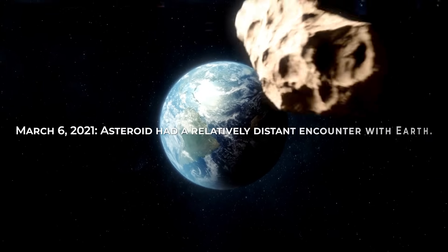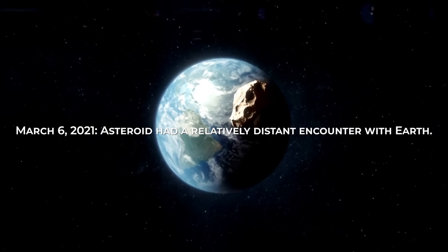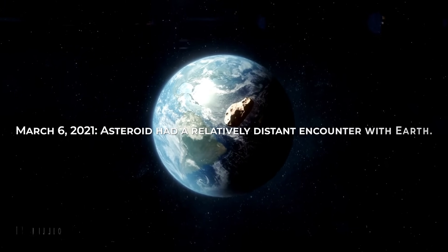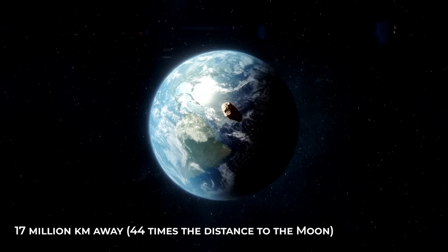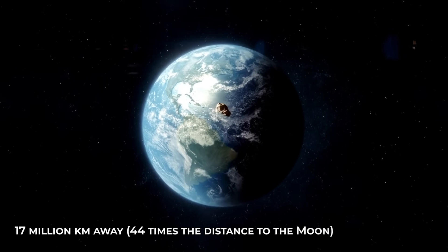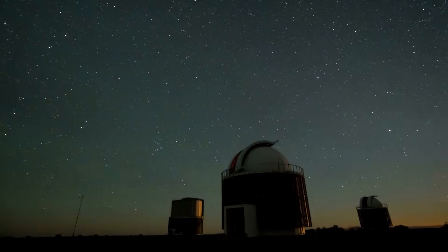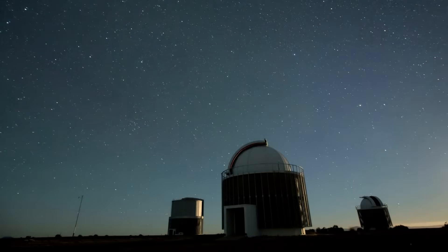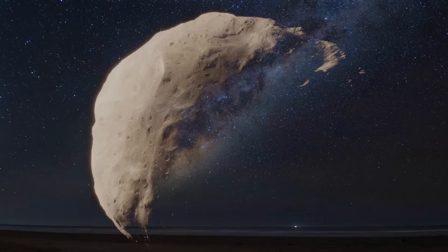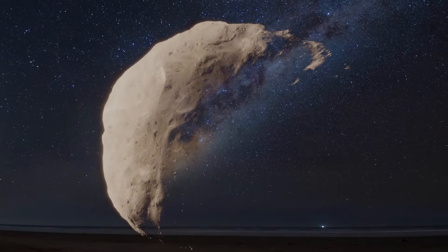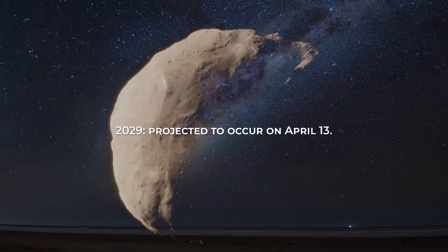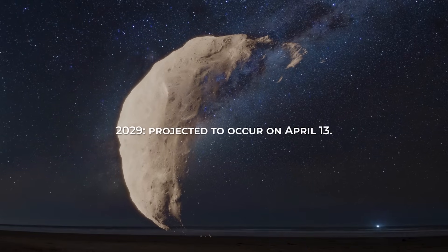On March 6, 2021, the asteroid had a relatively distant encounter with Earth, passing approximately 17 million kilometers away, 44 times the distance to the Moon. Despite still being quite far, astronomers managed to accurately measure the distance and refine the asteroid's orbit before its next, much closer approach in 2029, projected to occur on April 13.